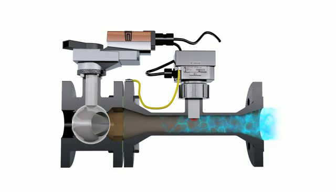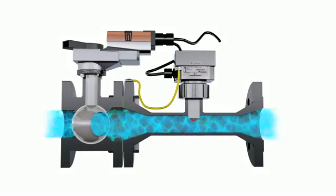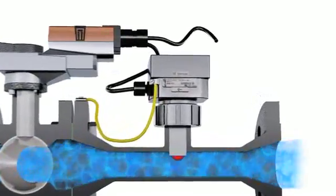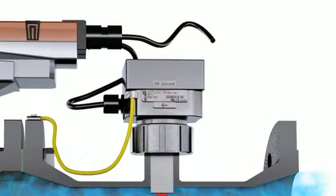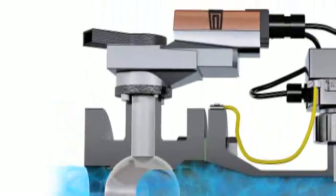The Electronic Pressure Independent Valve (EPIV) is a two-way valve which is unaffected by pressure variations in a system. The EPIV directly measures flow by combining a magnetic flow meter and a two-way control valve.